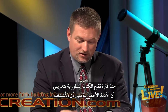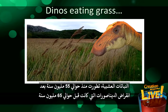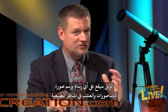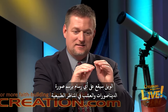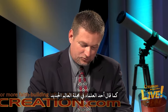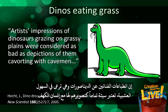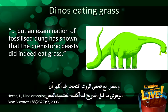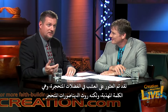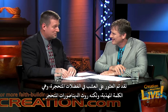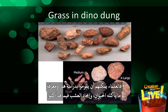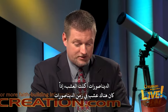Evolution textbooks have long taught that fossil evidence shows that grasses evolved around 55 million years ago, after the extinction of the dinosaurs about 65 million years ago. Any illustrator who drew dinosaurs with grass in the landscape was frowned upon. As one scientist in New Scientist magazine said, 'Artists' impressions of dinosaurs grazing on grassy plains were considered as bad as depictions of them cavorting with cavemen.' But an examination of fossilized dung — coprolite — has shown that the prehistoric beasts did indeed eat grass. Scientists can study coprolite and find out what the animal ate, and grasses are there. Dinosaurs ate grass; grass was there when the dinosaurs were.